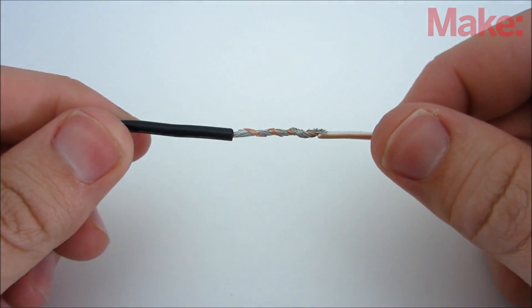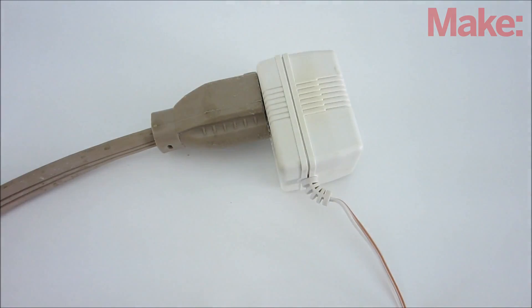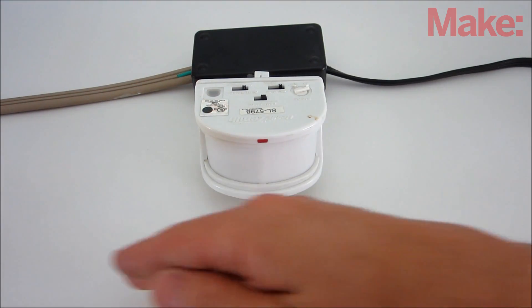To test it, connect the wires from the valve to the power adapter and plug the power adapter into the motion activated outlet. When you wave your hand in front of the motion sensor, you should hear the valve make a clicking sound.